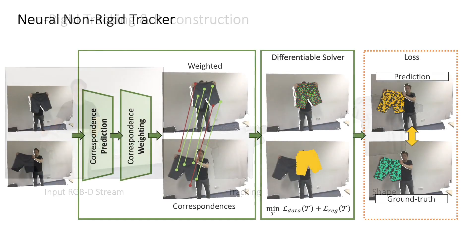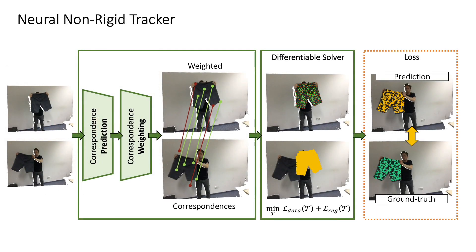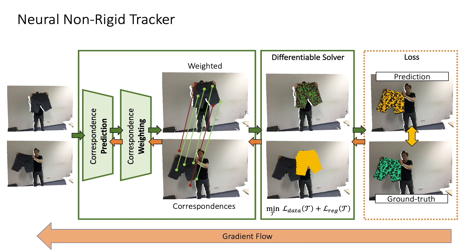We propose a neural non-rigid tracker, where we learn correspondence prediction and weighting in an end-to-end manner, enabled by our non-rigid differentiable solver. Our approach is fully differentiable, and gradients can flow from the loss defined on the non-rigid tracking result to the correspondence prediction and weighting networks. This way, correspondences that are better suited for the task of non-rigid tracking can be learned end-to-end.